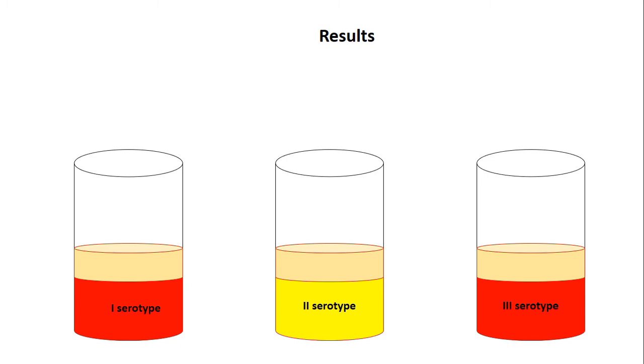From the three tubes we can see only one tube which changes the color of media - it's the second tube.